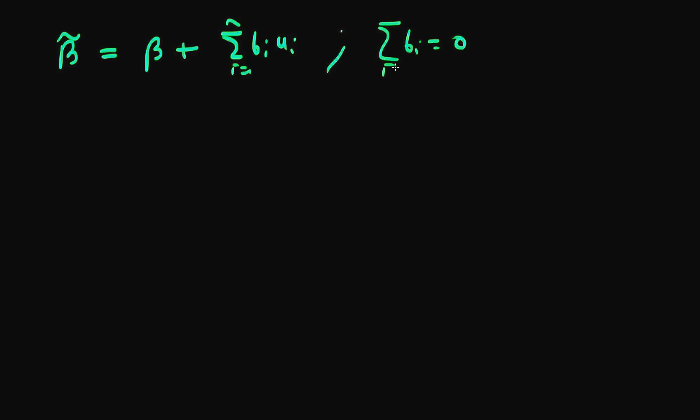Also, the sum of bi times xi from i equals 1 to n is going to be equal to 1. Those are the conditions which we derived in the previous video in order for beta tilde to be unbiased.